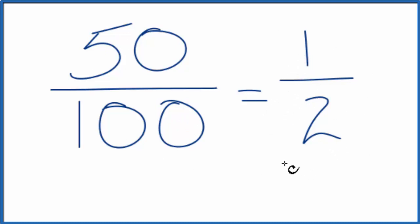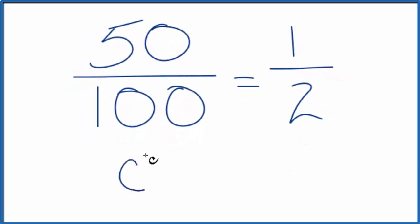If you converted these into decimals, 50 divided by 100, that's 0.5. 1 divided by 2, that's 0.5.